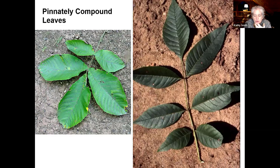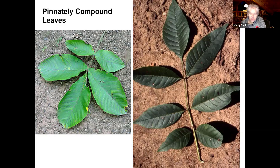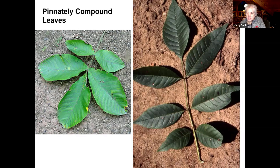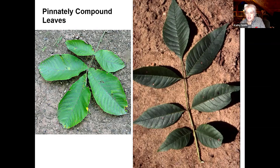Pinnately compound leaves — when we first encountered emerald ash borer, one of the first fact sheets we did was how to know if your tree was an ash. To tell the ashes apart, you need to know the number of leaflets. The one on the right is an ash with seven leaflets — keys may say seven to eleven, but it puts you in the ballpark for which ash species it is. This is actually green ash. On the left is another pinnately compound leaf — one of the hickories. Number of leaflets, what the terminal leaflet looks like, the leaf margins — there are lots of clues, but not if they only bring you one leaflet.